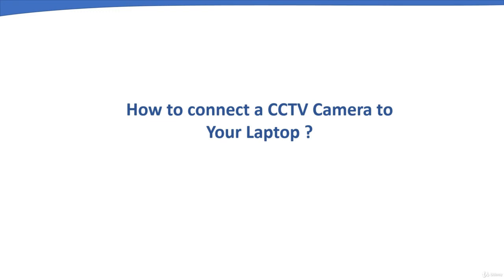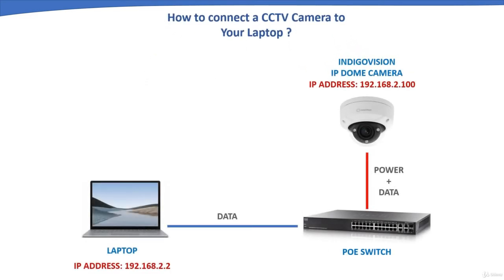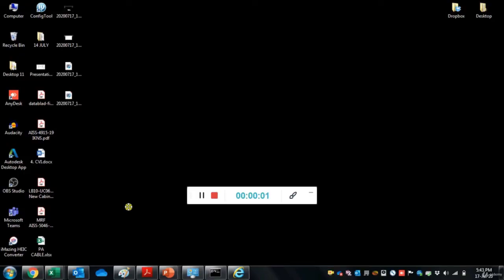This chapter demonstrates how to connect a CCTV camera to a laptop. For this setup, an IndigoVision IP camera with IP address 192.168.2.100 is connected to a PoE switch, and a laptop with IP address 192.168.2.2 is connected to the same PoE switch. To connect the laptop with an IP camera, both must be in the same network range. We will assign the same IP address range to the laptop.